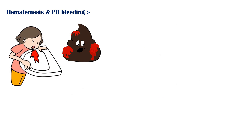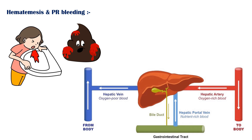Hematemesis and bleeding per rectum. As many of us know, the liver has a dual blood supply. One is from the hepatic artery, which supplies oxygenated blood to the liver, and the other one is from the portal vein, which supplies nutrient-rich blood from the small intestine. As the liver gets fibrosed in advanced liver disease, the blood must be pumped to the liver against an extra resistance, especially in the portal venous system.